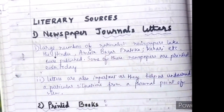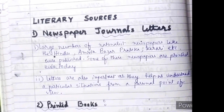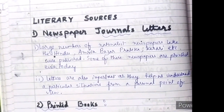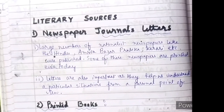A large number of nationalist newspapers like The Hindu, Amrita Bazar Patrika, and Keshari were published at that time. Some of these newspapers are printed even today.